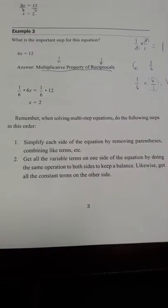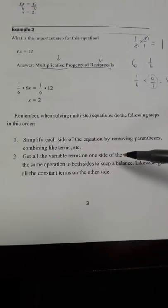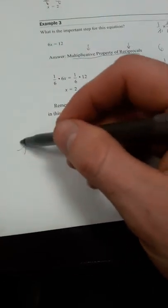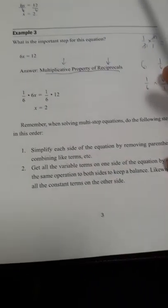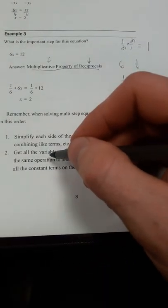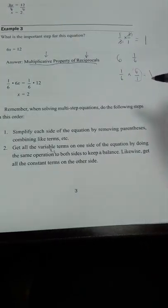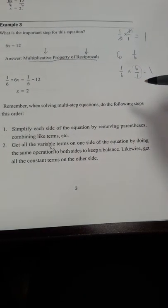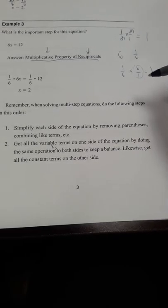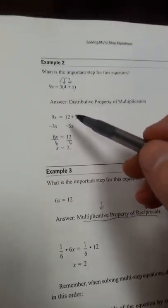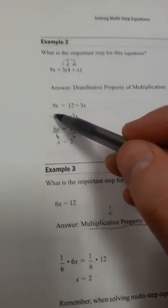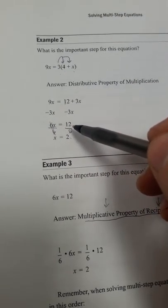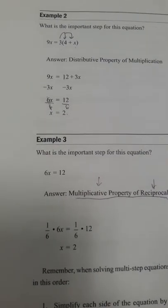Here's a summary of multi-step equations. Step 1: simplify each side by removing parentheses — that's what we did first. Step 2: get all the variable terms on one side of the equation by doing the same operation to both sides to keep it balanced. So subtract 3x from this side and subtract 3x from that side; divide this side by 6 and divide that side by 6.